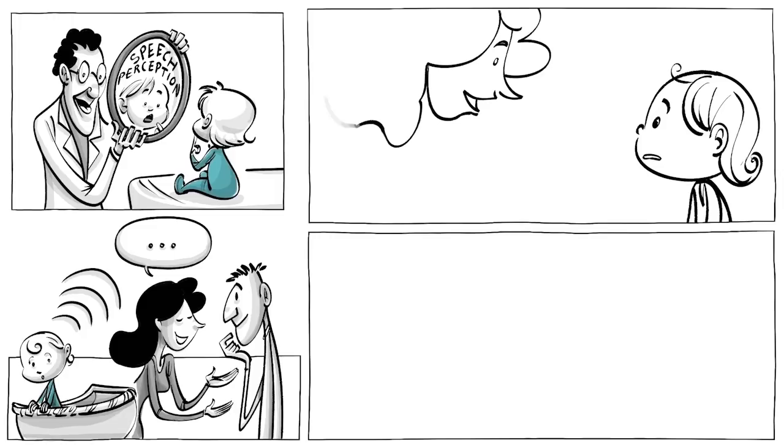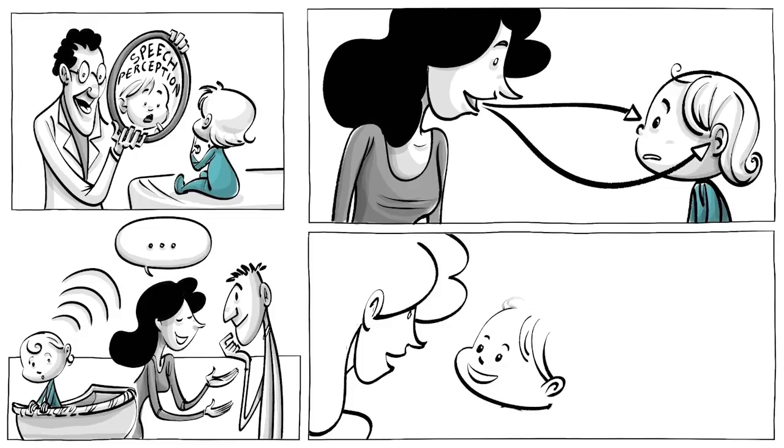Children begin to form speech perception at about six months old, when they start to pay attention to the sounds of spoken language. This usually happens as they focus on the movements of their parents' lips, to link visual with auditory input.